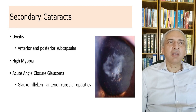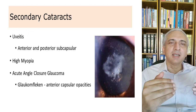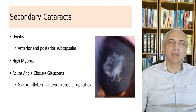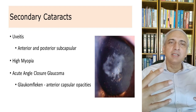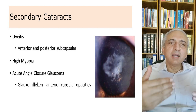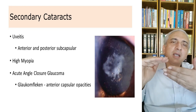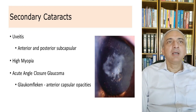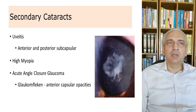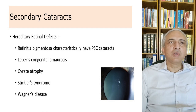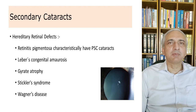Secondary cataracts occur due to disease inside the eye. Uveitis produces anterior and posterior subcapsular opacities: inflammatory leakage causes cells in the anterior chamber, the iris sticks to the lens surface forming posterior synechiae, and the vascular iris produces opacities at the contact area. Secondary cataracts also occur due to high myopia. Acute angle-closure glaucoma produces small opacities in the anterior capsule called glaukomflecken.